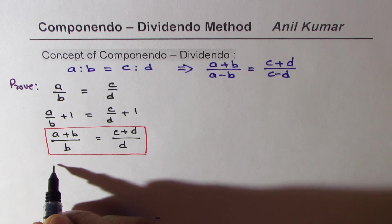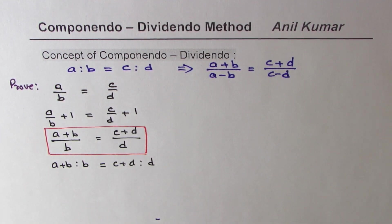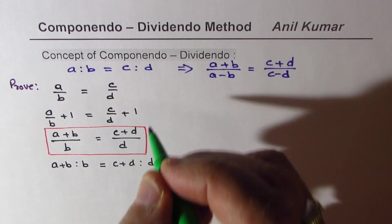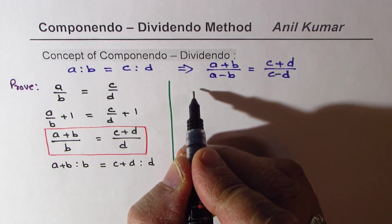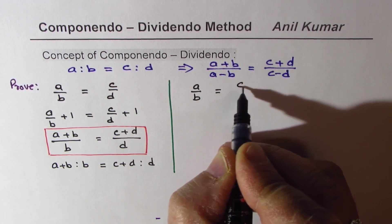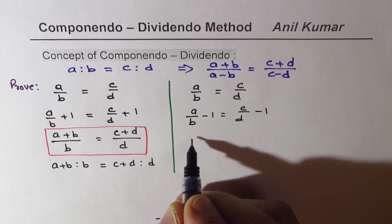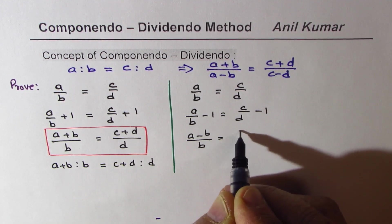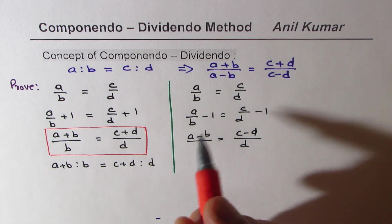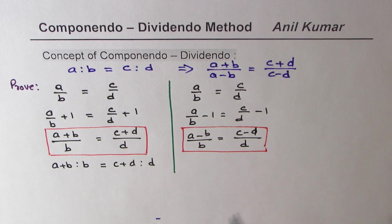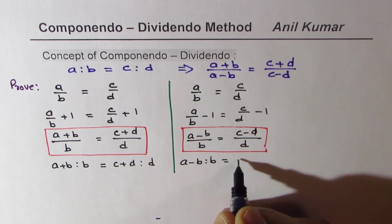That is to say, a plus b is to b is equal to c plus d is to d. So that is one rule — we call it componendo. Now let us see what happens when we subtract 1. Beginning with a over b and subtracting 1, we get a minus b over b equals to c minus d over d. So another ratio: a minus b is to b is also equal to c minus d is to d. We call this rule dividendo.